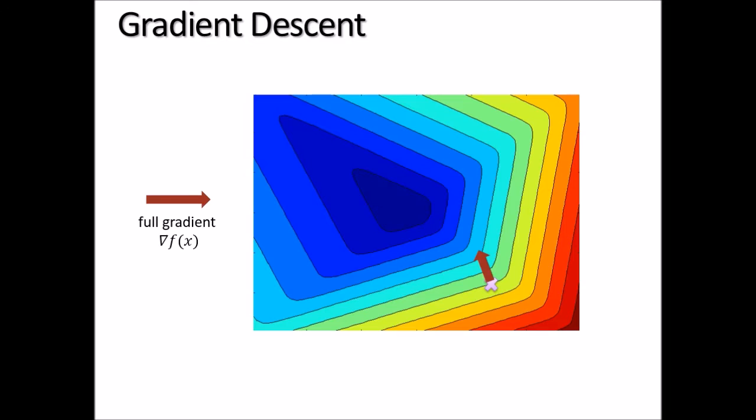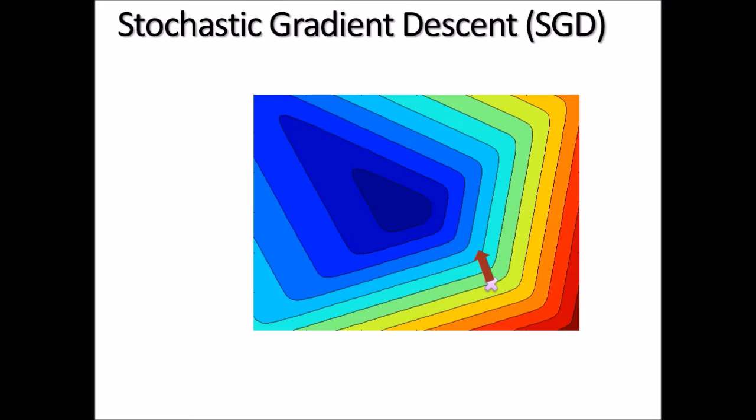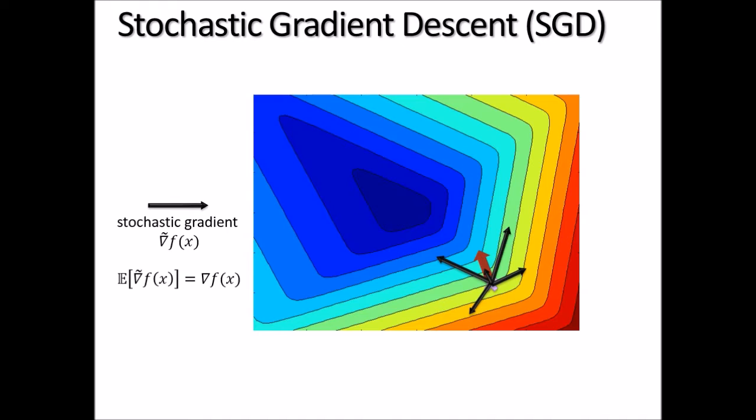Everyone knows gradient descent — it means going in the direction of the gradient to minimize the objective value. Everyone also knows stochastic gradient descent: instead of going in the full gradient direction, which may take a long time to compute, we go in the direction of a random gradient, the stochastic gradient, hoping that its expected value equals the full gradient.